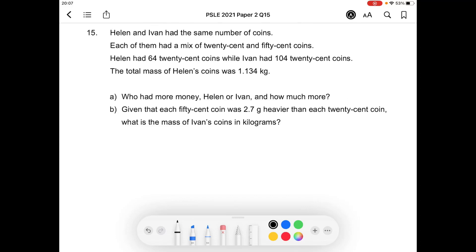Question 15. Helen and Ivan had the same number of coins. So first, we can draw a model to show that the two of them had the same number of coins.